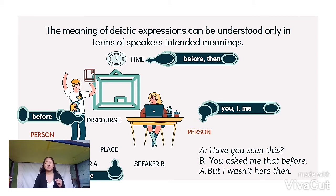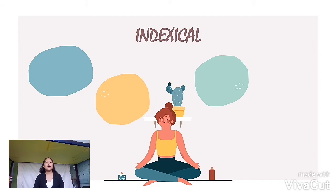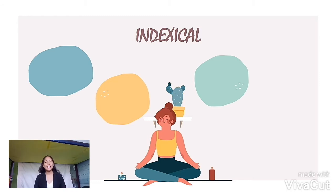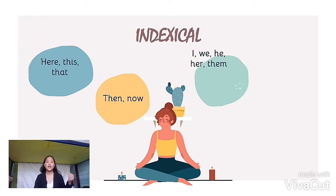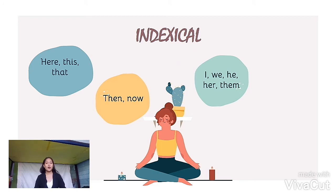So remember that the meaning of diactic expression can be understood only in terms of the speaker's intended meanings. When we indicate something, we use expressions. These expressions are called indexicals. These expressions require an addressee to be able to pick out a person, place, or time relevant in understanding how the words refer.